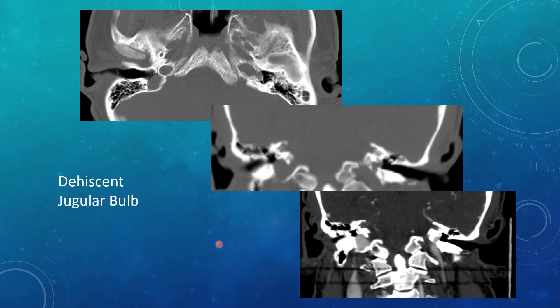A dehiscent jugular bulb is another vascular pathology to keep an eye out for. The jugular bulb should have a bony covering separating it from the middle ear cavity. Here you can see there's just low density material — no bony covering. On the coronal, you can see the lack of bony covering where the jugular bulb connects to the air in the middle ear cavity. This is a dehiscent jugular bulb.